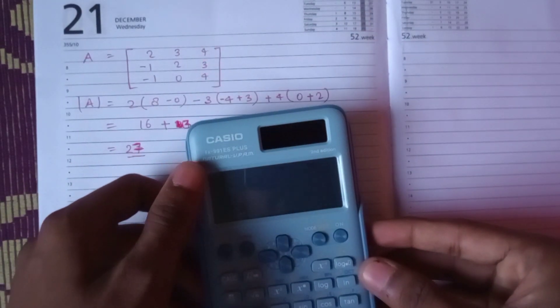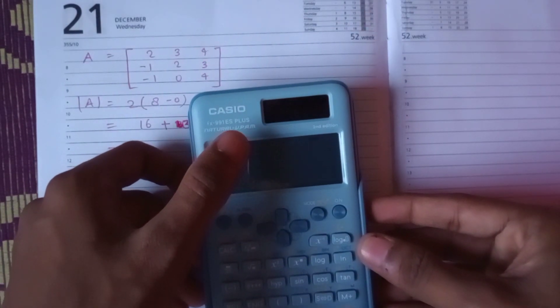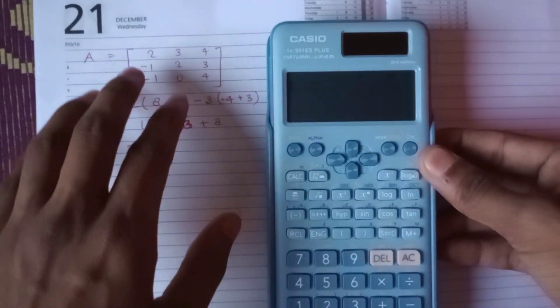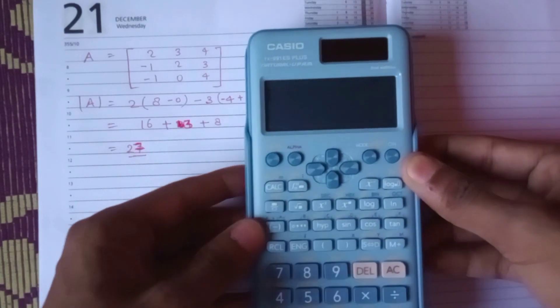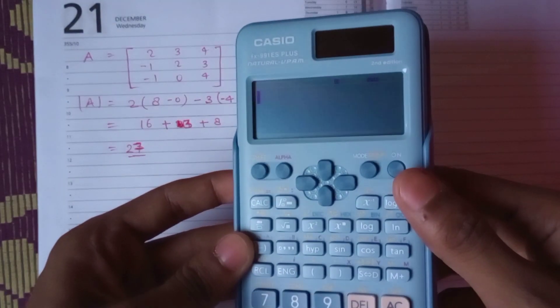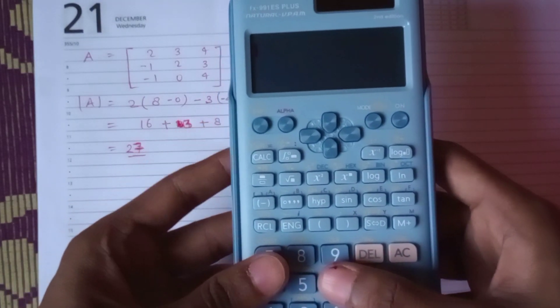As this is going to be the playlist for the 991 ES Plus calculator, we have to solve this determinant using this calculator. Just press it on, and now you have to press Mode.